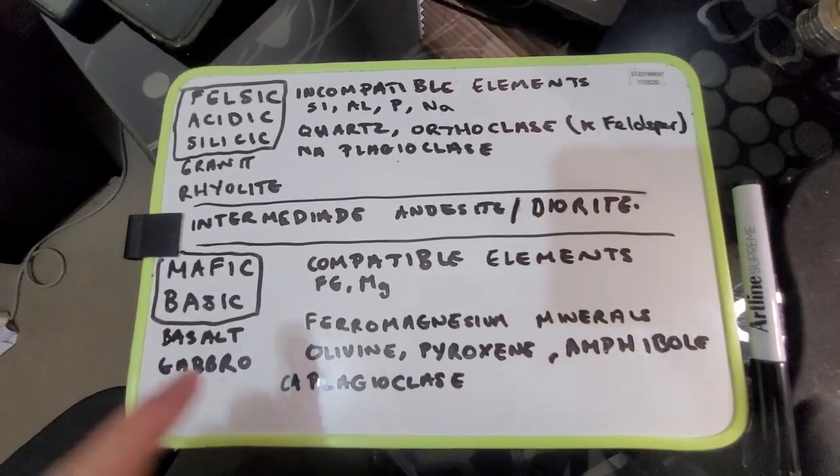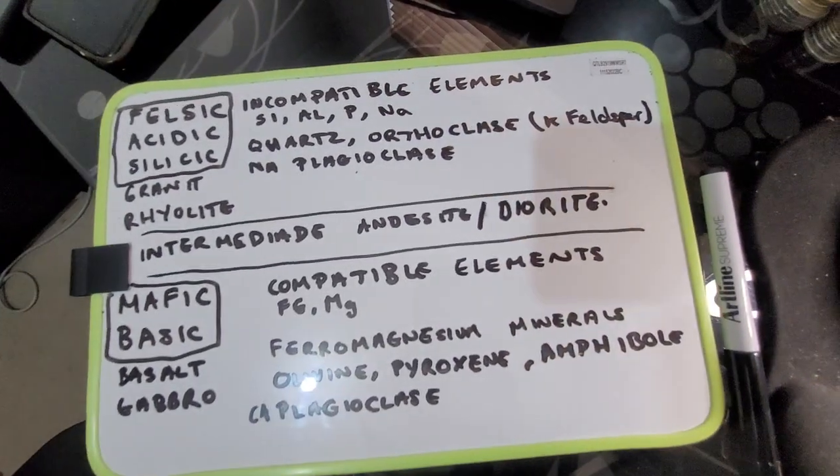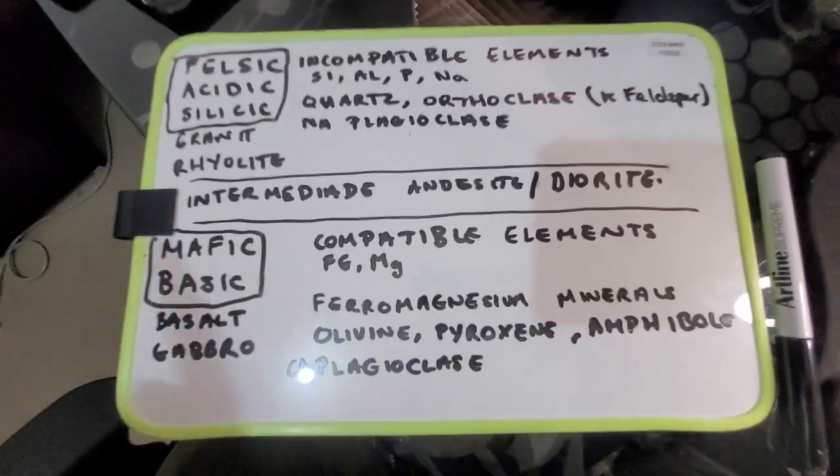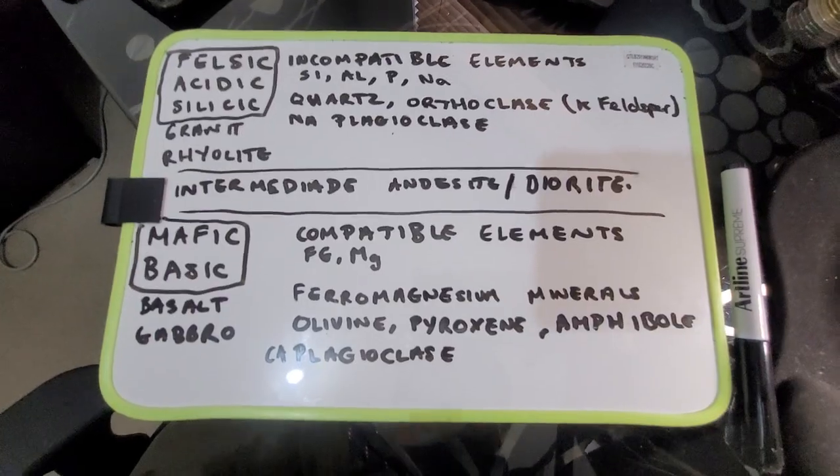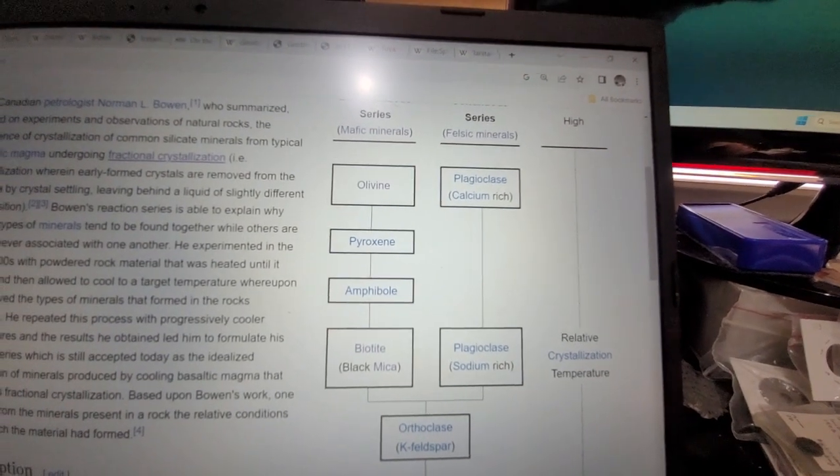This is a grading system - as the calcium is used, it starts to use sodium. If you know the Bowen reaction series, here we have the Bowen reaction series. You've got high temperatures at which olivines and calcium-rich plagioclase would form first.